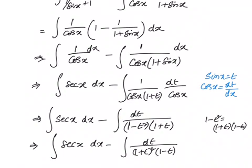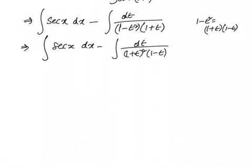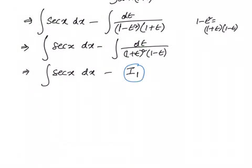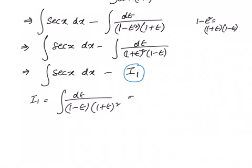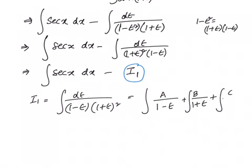We will leverage partial fractions to simplify this problem. The integral of secant x is log of secant x plus tan x — we are just holding on to that. Now let us call this i1. i1 is integral of dt by 1 minus t into 1 plus t whole squared. We can write it as integral of a by 1 minus t plus integral of b by 1 plus t plus integral of c by 1 plus t whole squared, dt.